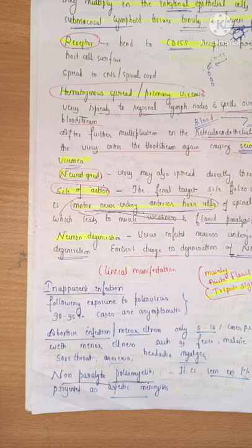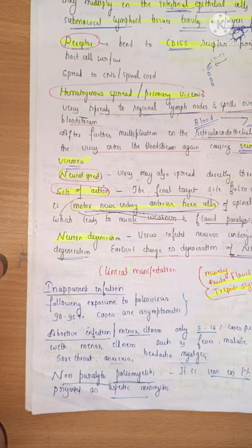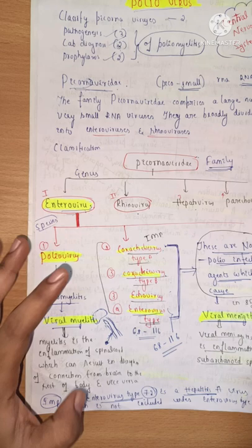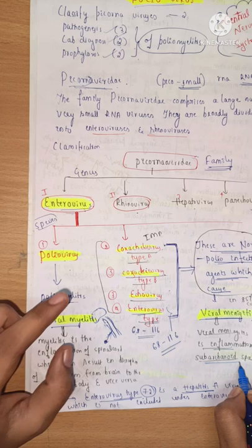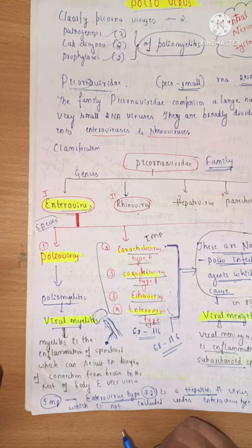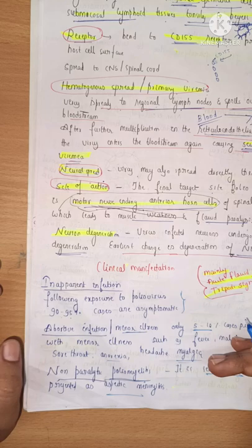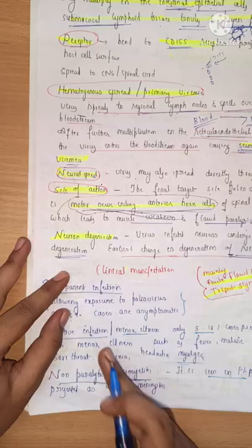As mentioned in the earlier video, the family Picornaviridae can cause viral myelitis as well as meningitis. Meningitis is the inflammation of the subarachnoid space, whereas poliomyelitis is the inflammation of the spinal cord, which can result in disruption of the connection between the brain and body parts. In one percent of patients it presents as non-paralytic — aseptic meningitis — with no paralysis.